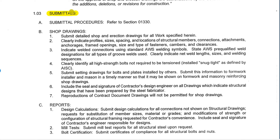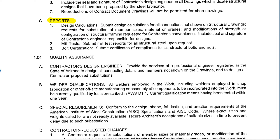Next we're going to get down to submittals. In general conditions — or 1330 in this particular project — it talks about the specifics and procedures for submitting. In the spec section itself, it's going to talk about exactly what needs to be submitted. For structural steel, we're looking at shop drawings — the detailed shop and erection drawings — along with different reports such as design calculations for connections, mill tests with information from the raw steel, and bolt certification to show compliance.